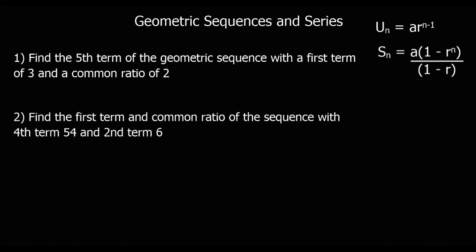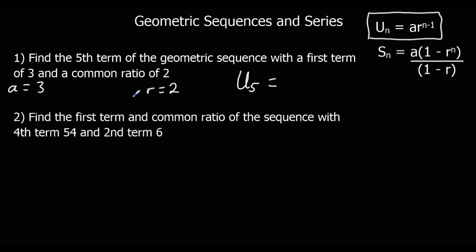Pause the video, give these two a go, and press play when you're ready. For the first practice question: find the fifth term of a geometric sequence with first term a = 3 and common ratio r = 2. We want u5, which is 3 multiplied by 2 to the power of n minus 1. If n is 5, n minus 1 is 4. So we've got 3 times 2 to the power of 4, which is 48.